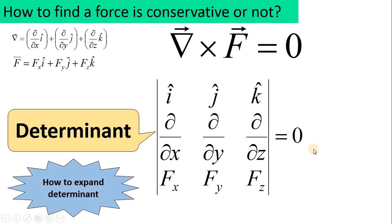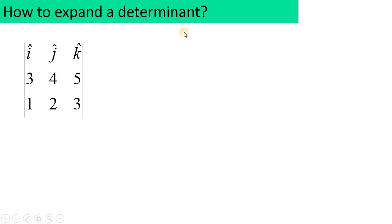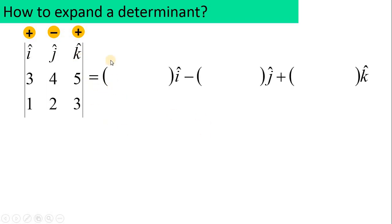Let us practice determinant expansion with a simple example. Suppose we have a determinant with first row î, ĵ, k̂; second row 3, 4, 5; third row 1, 2, 3. To expand: assign a plus sign over î, minus sign for ĵ, and plus sign for k̂. For the î bracket, hide the numbers below î — the remaining four numbers are used for cross multiplication.